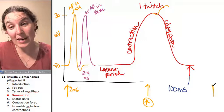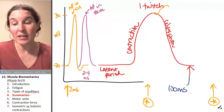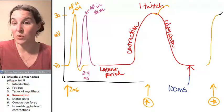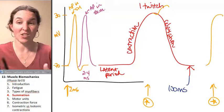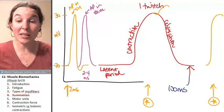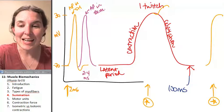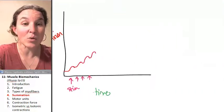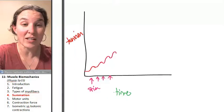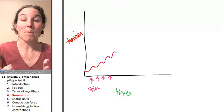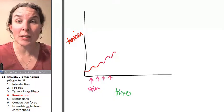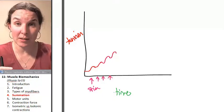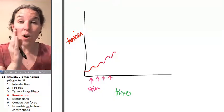If we waited and threw the stimulus in at this point, then our twitch is going to be just what you would expect. It's just going to be normal because we already got to relax. This is called summation. Summation is the fact that you can increase the amount of tension that you have by speeding up the frequency of stimulus. So you stimulate more often.